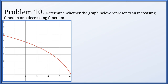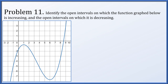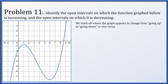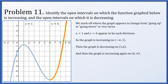For problem ten, we determine whether the graph represents an increasing or decreasing function. As x moves to the right, the graph is moving down — the function is decreasing. For problem eleven, we identify open intervals where the graph is increasing or decreasing. The graph changes direction at x = 1 and x = 6. The function is increasing on (-∞, 1), decreasing on (1, 6), and increasing again on (6, ∞).